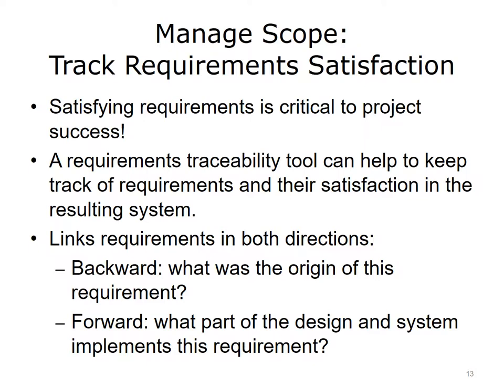Another way to manage scope is by tracking requirements satisfaction. Software tools can be very helpful here — often called computer-assisted system engineering tools, or CASE tools, they help manage scope by tracking changes in requirements. For example: What was the origin of a given requirement? What stakeholder wanted it? What business need does this requirement support? When was it made a requirement — as part of the original project charter or a later edition? Looking forward, what part of the design or system implements this requirement? What version or release of the system will implement it? And regarding test validation, who will test this requirement to make sure the system satisfies it? CASE tools can help you show customers how requirements have been met during the project and in the final system.